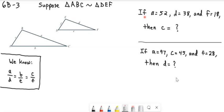It says if A is equal to 52, let me go ahead and write this stuff in. If A is equal to 52, so over here, side A is 52, and side D is 38. And if side F is 18, that's right here. Then we want to know, what is C? What is C equal to?